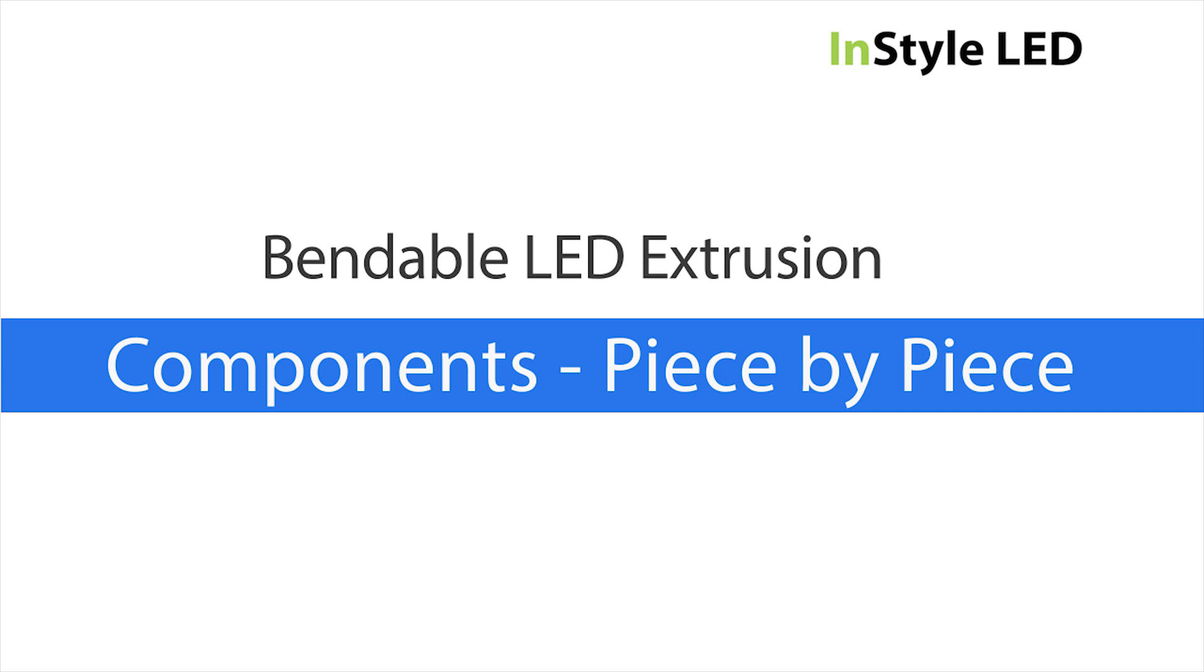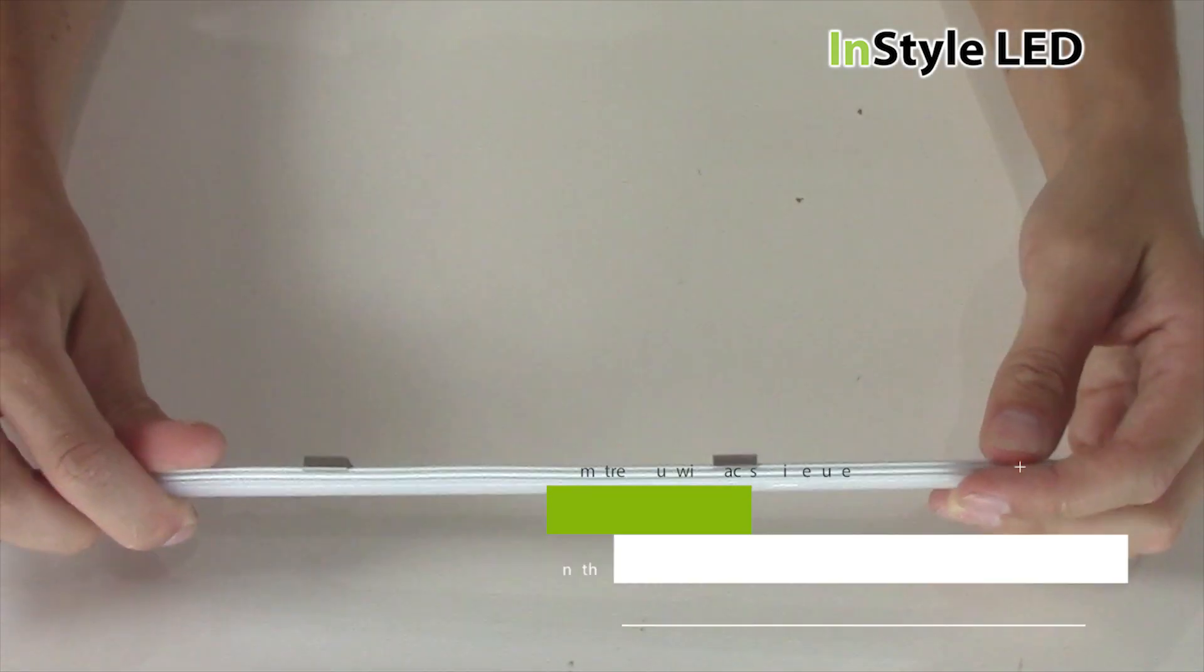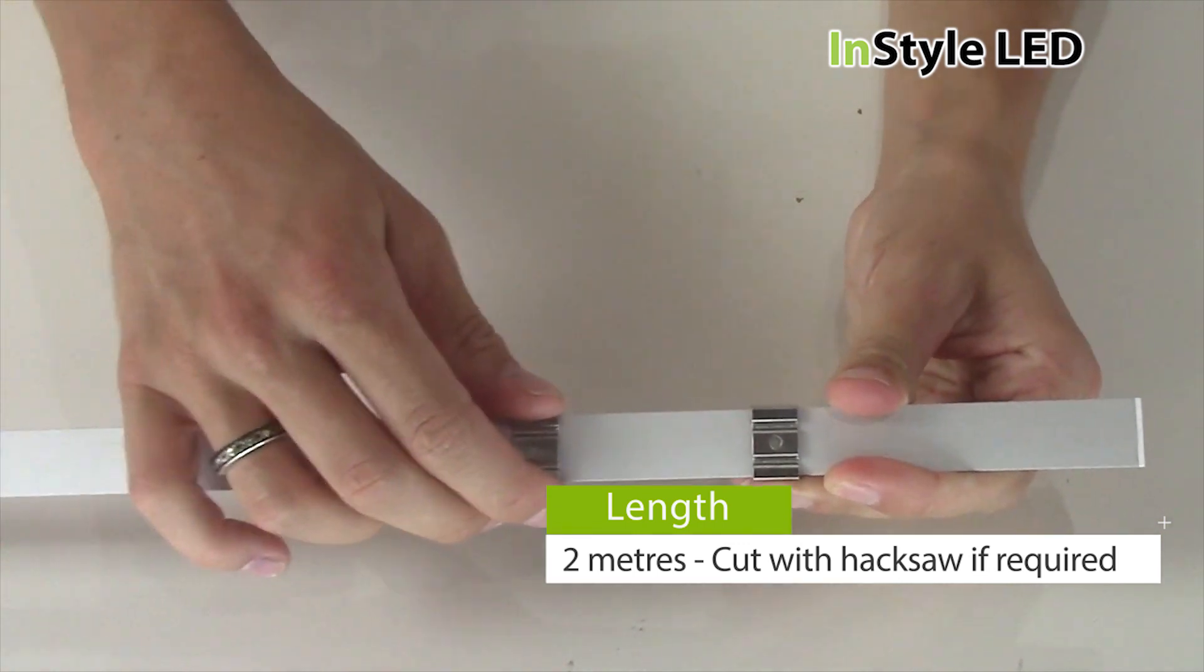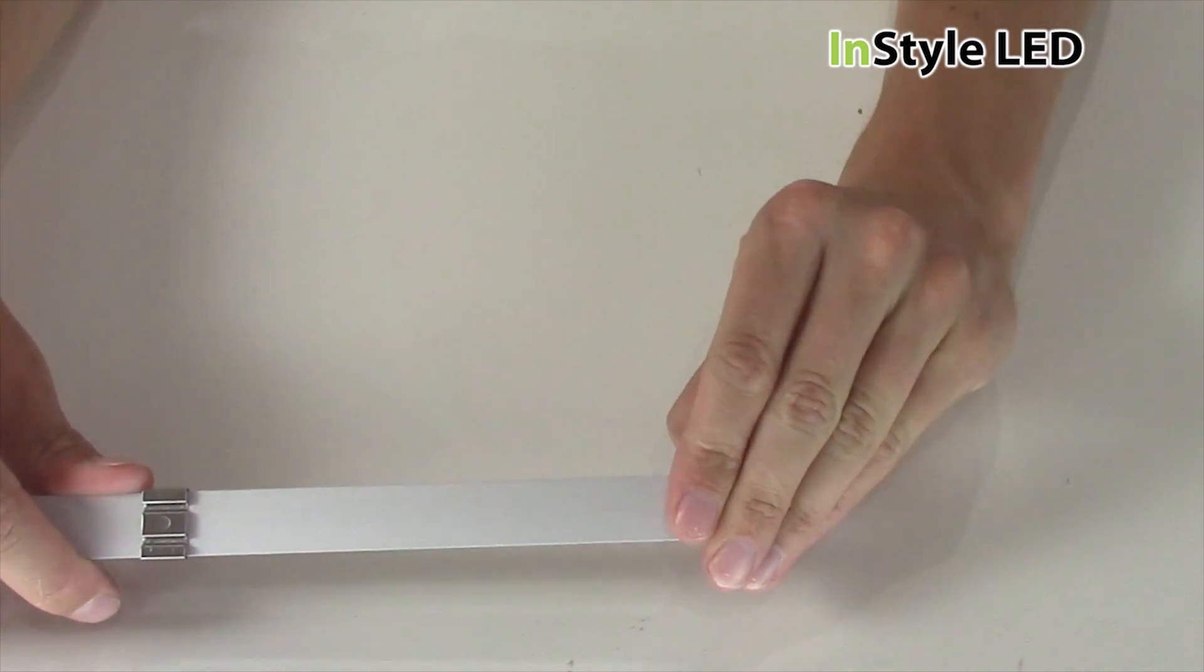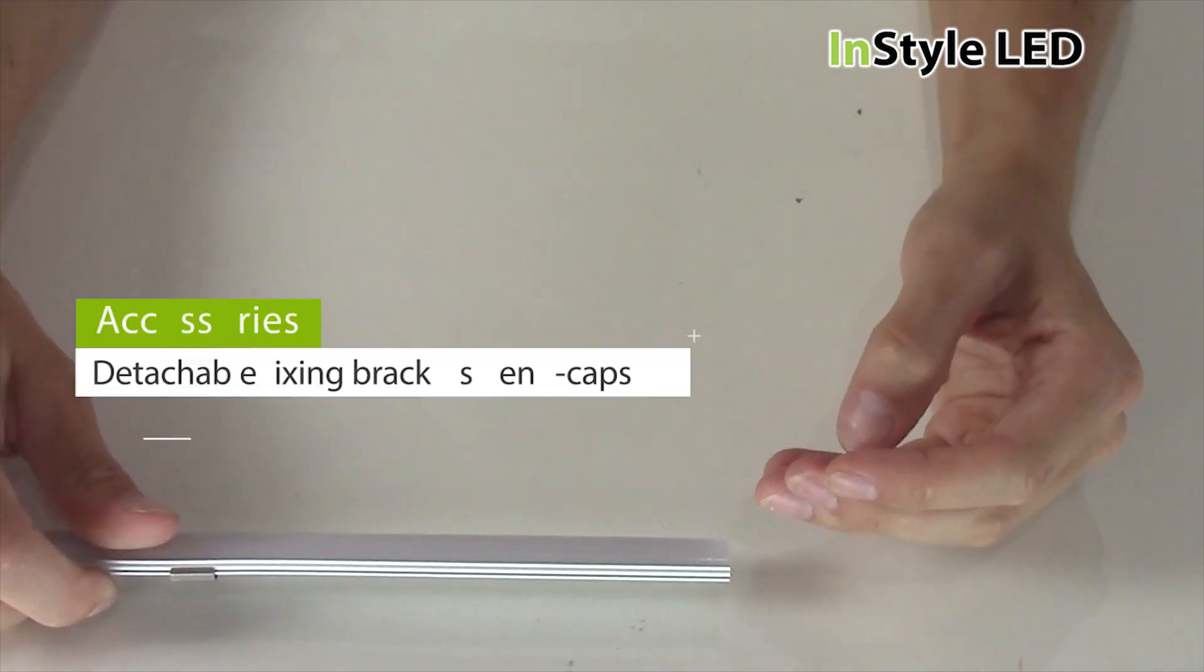The bendable aluminium extrusion by InStyle LED is available in 2m straight lamps. There are fixing brackets to keep the extrusion into place. End caps are used to offer a finished product look.